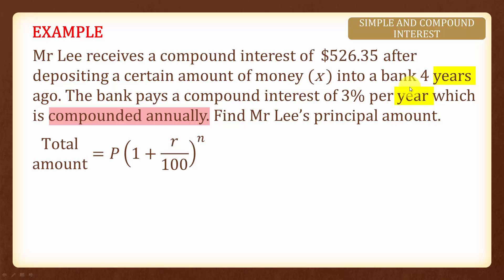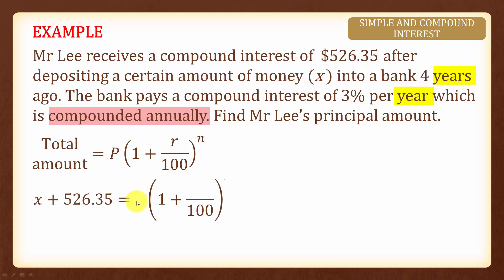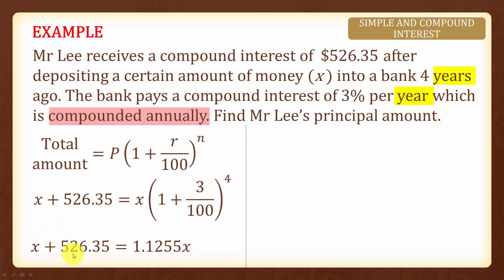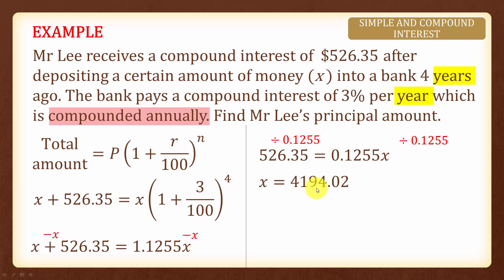The time period is all in years. The total amount will be X — the initial amount — plus the compound interest. The principal amount is X, the interest rate is three percent per year, and the number of times compounded is four since we compound annually. Simplifying the algebra, we have X plus 526.35 equals 1.1255X. Subtracting X from both sides and then dividing both sides by 0.1255 gives us X equals four thousand one hundred and ninety-four dollars and two cents.